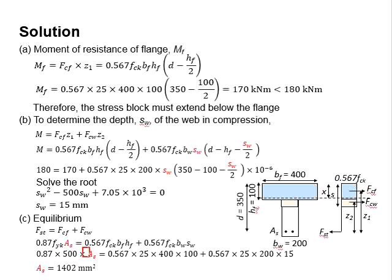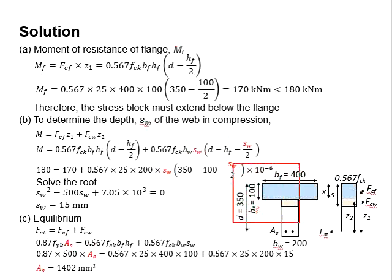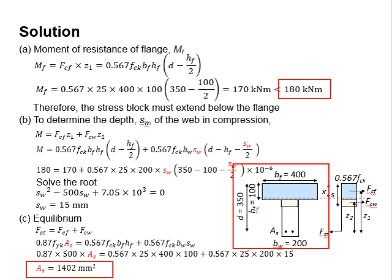Now, As is the only unknown within the equation. Solve this equation. You will obtain your As is equal to 1402 mm². With that, for the flange section to resist a load of 180 kNm, the amount of reinforcement bar required here needs to be at least greater than 1402 mm².